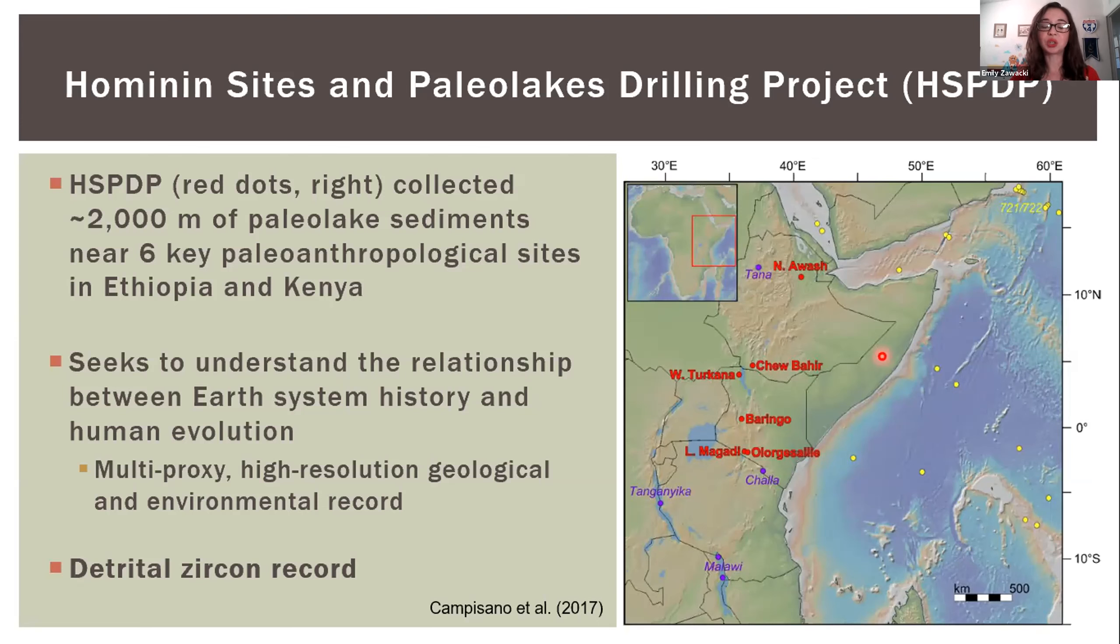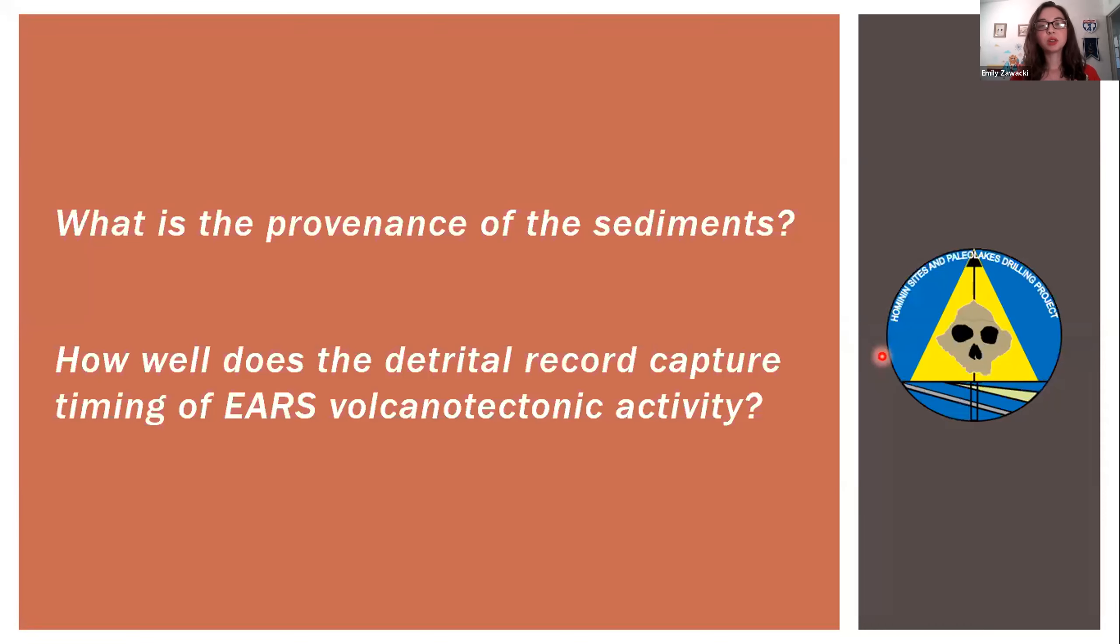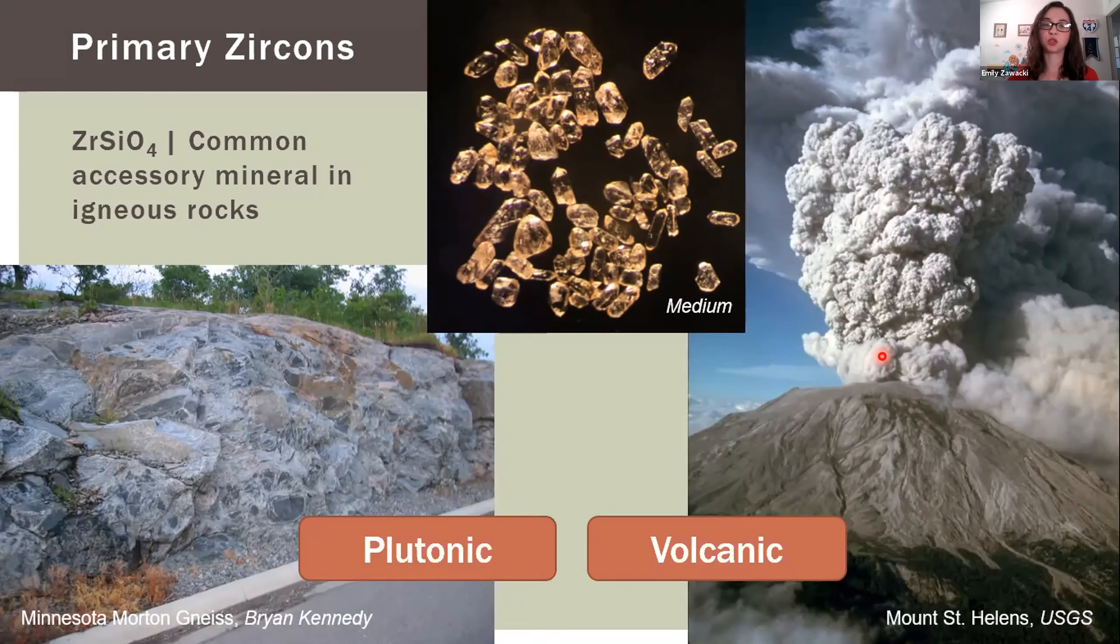The Hominin Sites and Paleo Lakes Drilling Project collected about 2000 meters of paleo lake sediments near six key paleoanthropological sites in Ethiopia and Kenya. One component of the project is to look at the detrital zircon records. I'm looking to answer questions like what is the provenance of the sediments in the drill cores and what does that tell us about changes in the paleo landscapes over time.